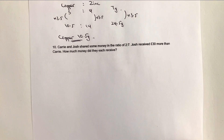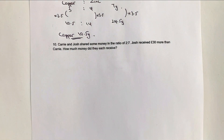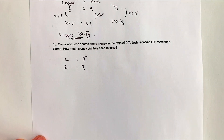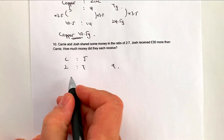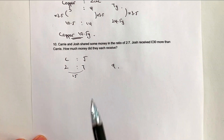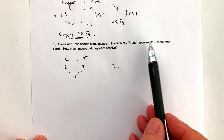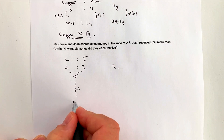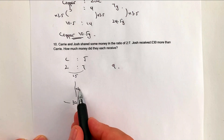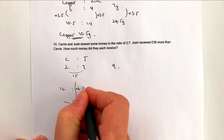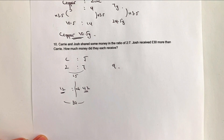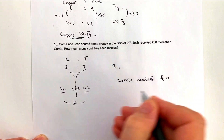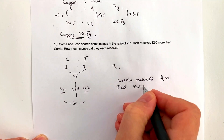Final question — Carrie and Josh shared some money in the ratio 2 to 7. In this particular case they saved altogether £9 in base numbers, and the difference between Carrie and Josh was plus 5 according to our base numbers. However, Josh received £30 more than Carrie. If I multiply through by 6, I'm going to get £30 difference between the two. So I multiply each of these numbers through by 6 and I get 12 to 42. So Carrie received £12 and Josh received £42, and that's the answer to this particular question.